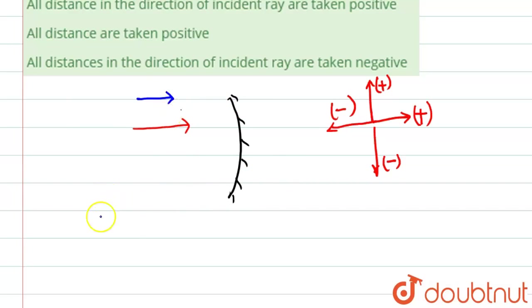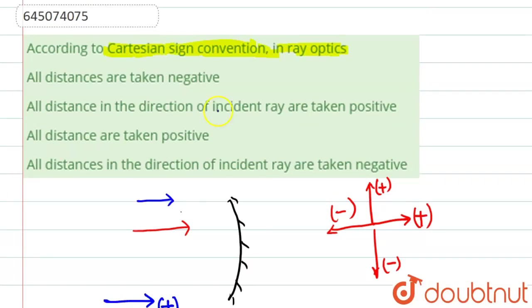In projectile motion also, if you remember, then what happens is that the side of the velocity, means if the velocity was in this direction, that this direction was only considered to be as positive.